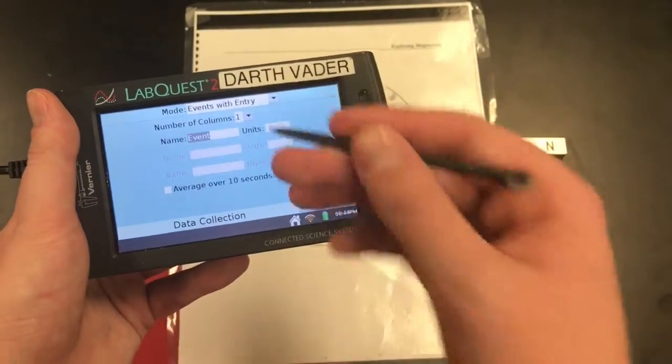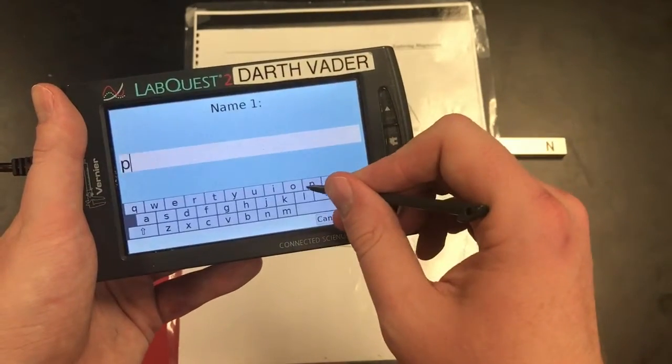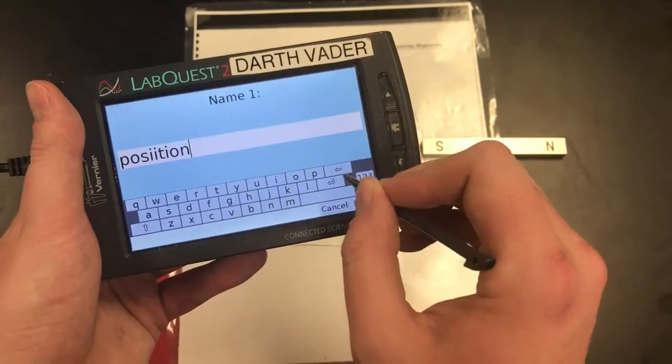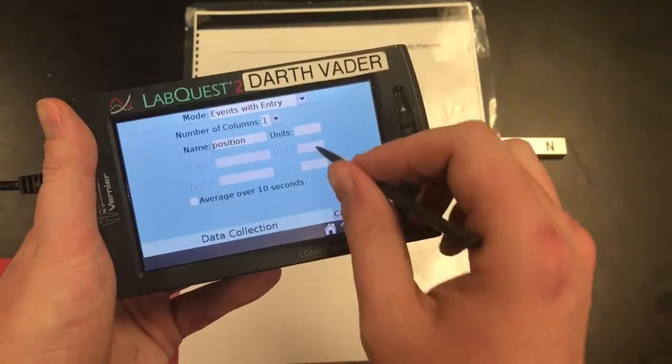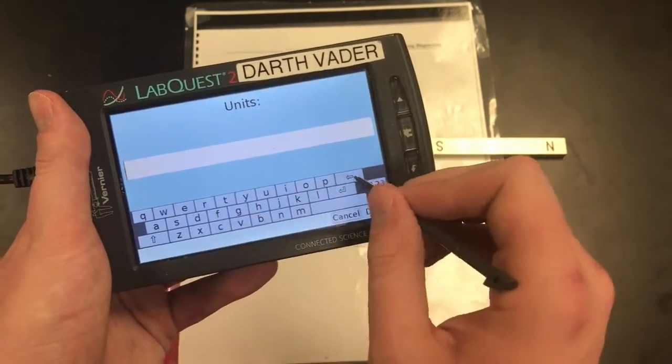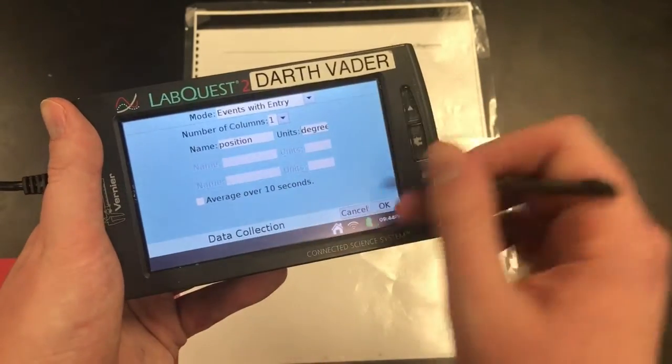Our mode is going to be events with entry for part two, and the name of our event is going to be position, and our units are going to be in degrees.